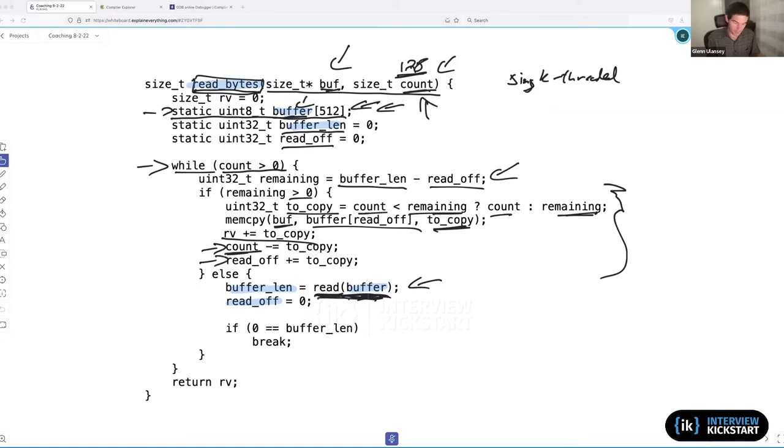We also update our read offset. If the amount of data we've just read from the buffer isn't all the data left, we need to make sure that the next time someone calls read_bytes, this read offset is correct so we can then read the next data. Once this while loop has gone around enough times, finally we will have read all the data and can return, and the client has the number of bytes they asked for.